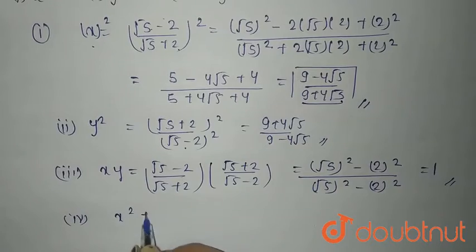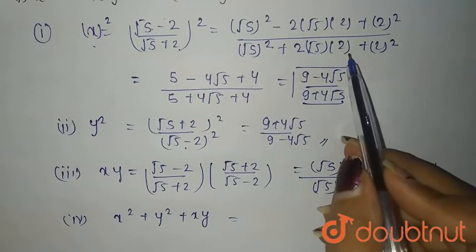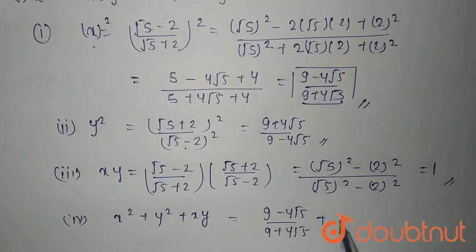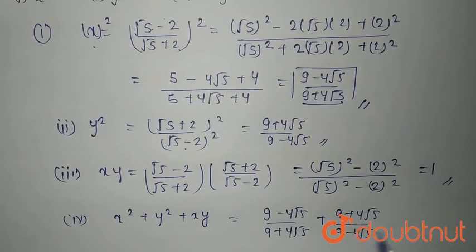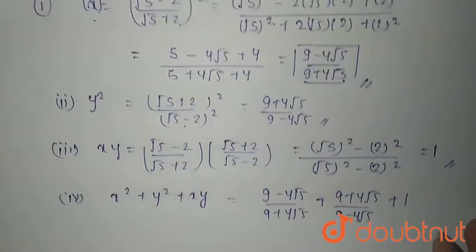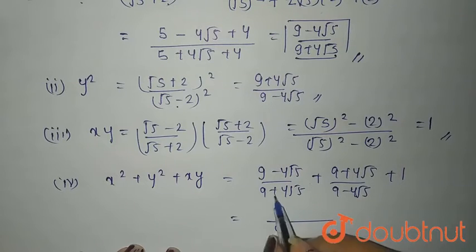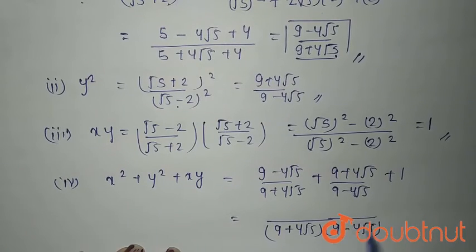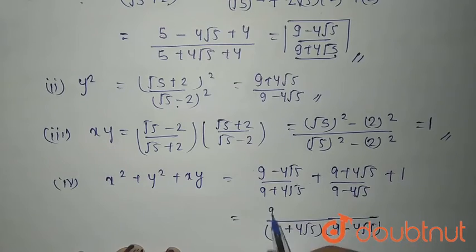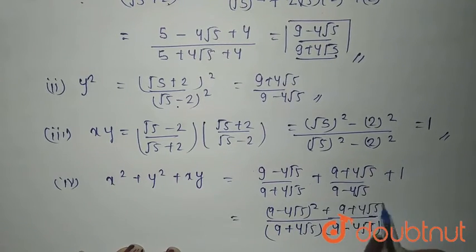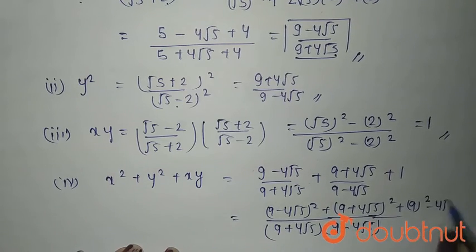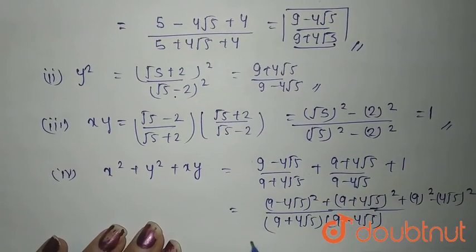Now, fourth is x squared plus y squared plus xy. So, this is (9 minus 4√5) upon (9 plus 4√5), plus (9 plus 4√5) upon (9 minus 4√5), plus 1. By taking LCM of (9 minus 4√5)(9 plus 4√5), you get (9 minus 4√5)² plus (9 plus 4√5)², plus (9 plus 4√5)(9 minus 4√5). Using the identity (a+b)(a-b) = a² minus b², that is 9² minus (4√5)², and adding up and multiplying, you get the answer 323.